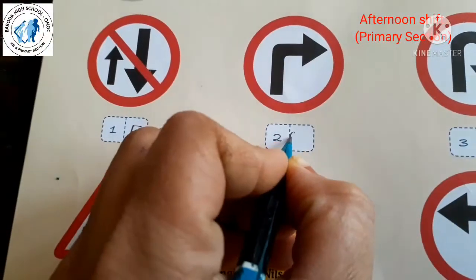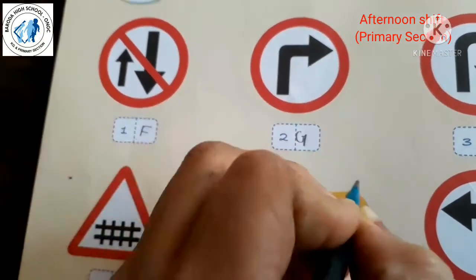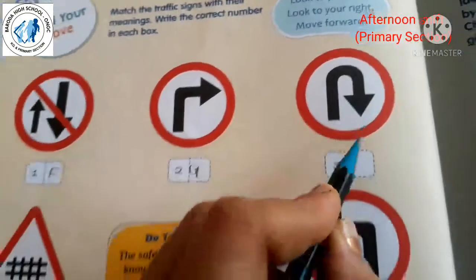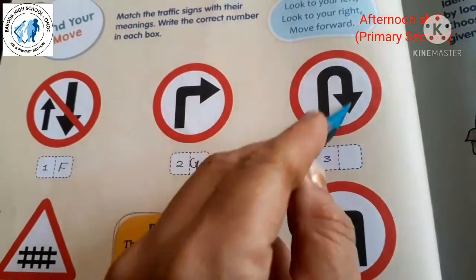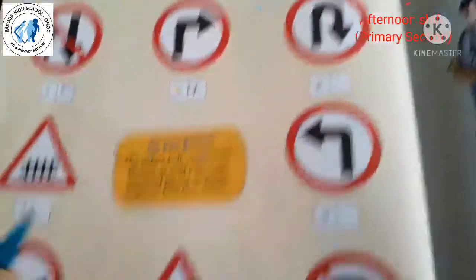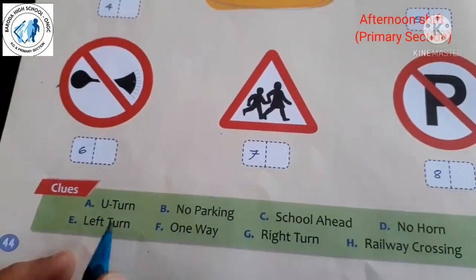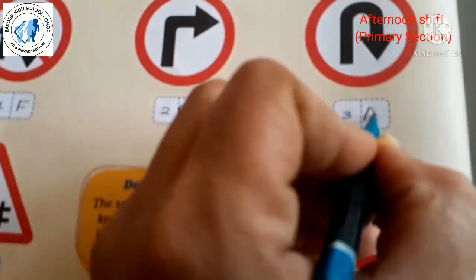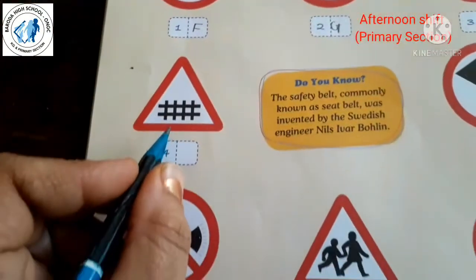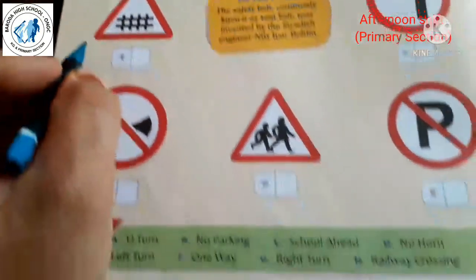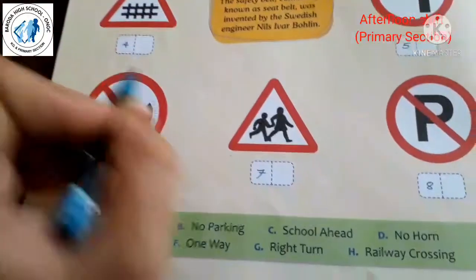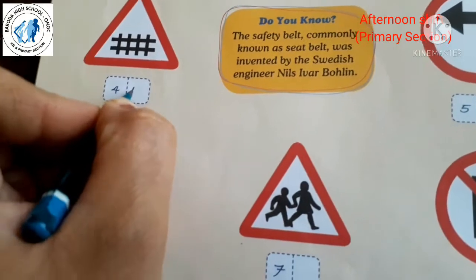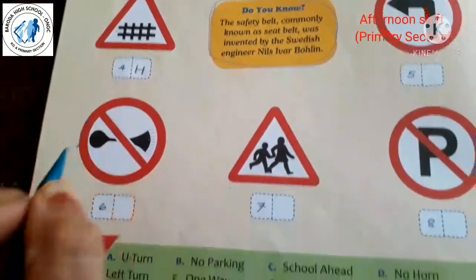The third sign is 'U-turn', meaning take a U-turn. The answer for U-turn is A, so write down A. The fourth sign is 'railway crossing', and the answer for railway crossing is H, so write down H in the fourth box.